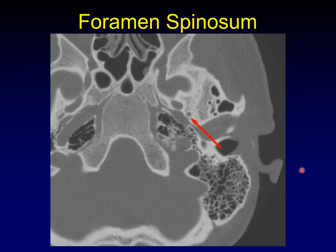Back to this picture. If that was foramen ovale, this is foramen spinosum, which carries the middle meningeal artery up to the inner table of the skull. These pair — foramen ovale plus foramen spinosum — has been likened to the imprint of a high-heeled shoe. So if you can find that footprint, you can orient yourself to ovale and spinosum.